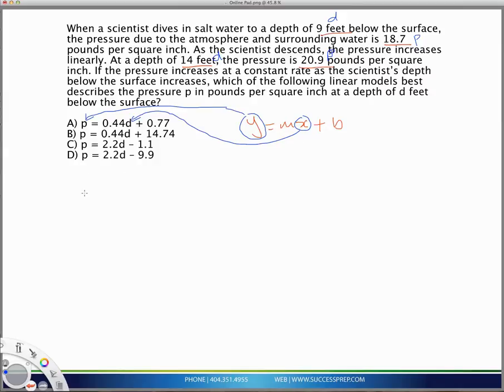So, if we take a, for example, the equation for a, we look at a, the equation for a is p equal to 0.44 with a d plus 0.77. So, let's test that.